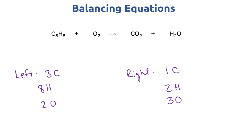Let's start with carbon. There are three carbons on the left and one on the right, so we put a three before CO2. Now we have three carbons, but this has also changed our oxygen count. We now have three CO2 molecules and each CO2 has two oxygens, so that's six oxygens from CO2, plus the one we have in H2O — so right now we have seven oxygens on the right.